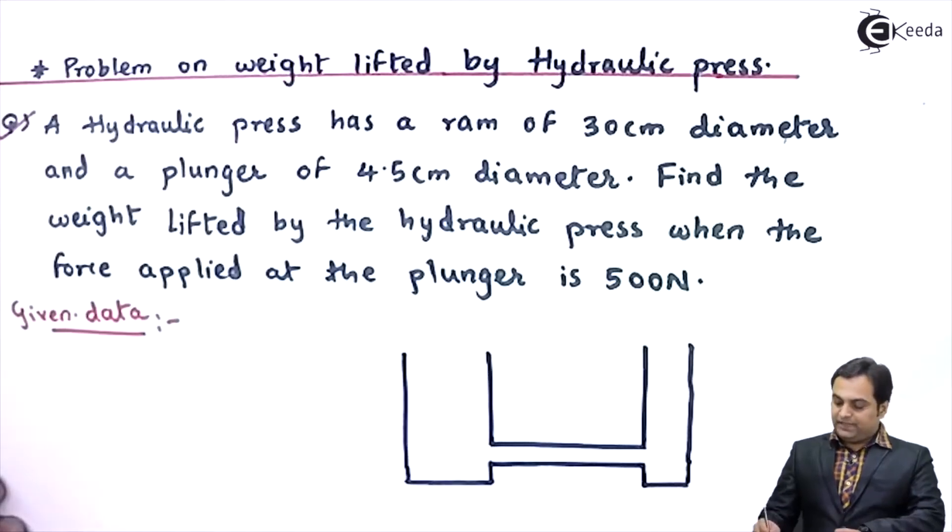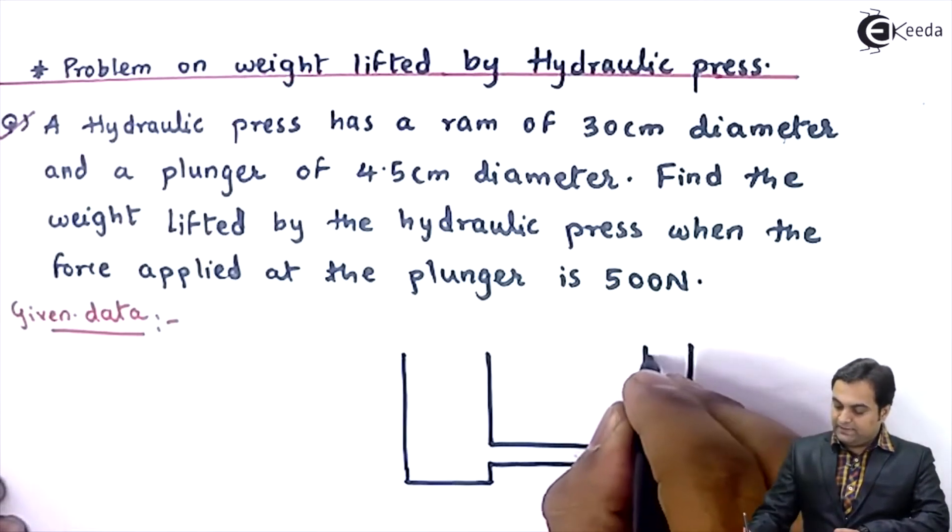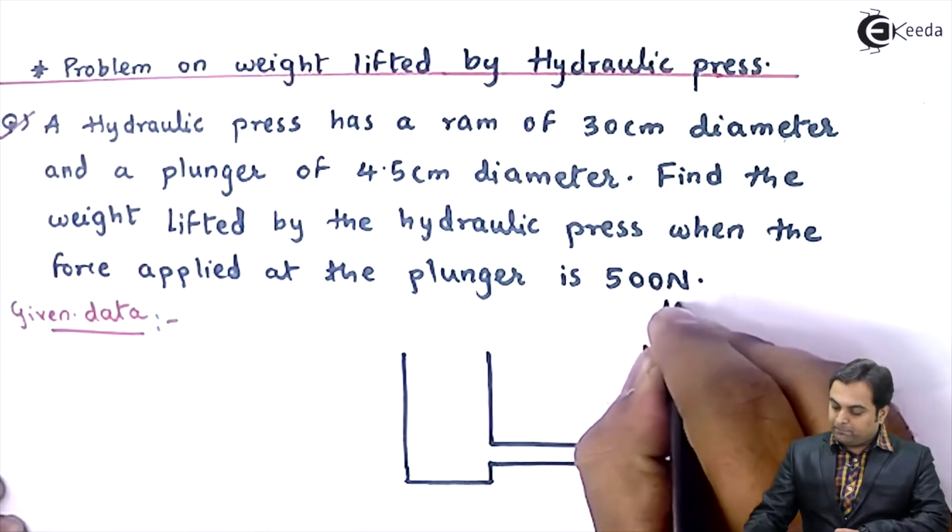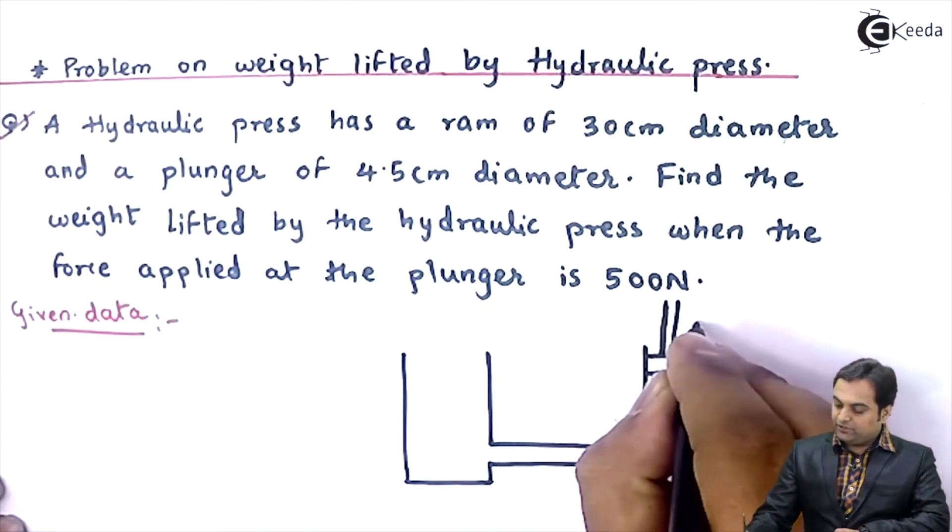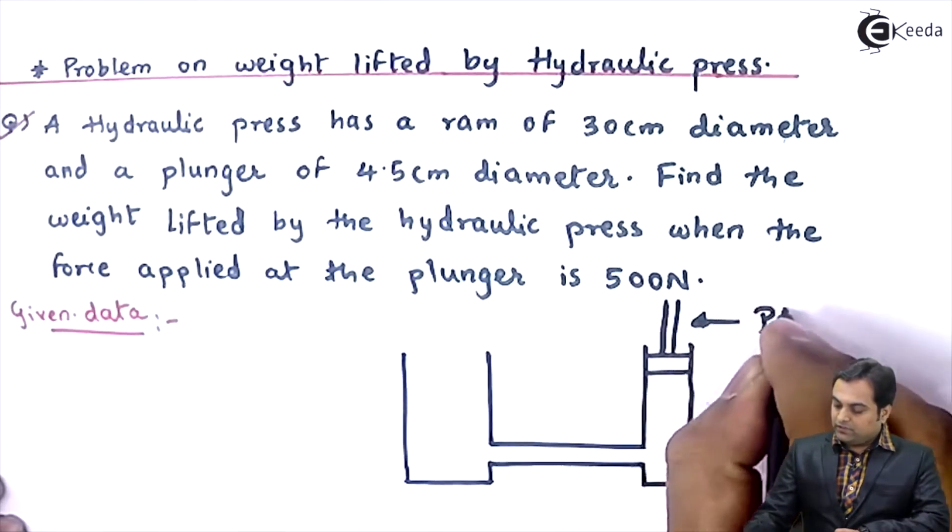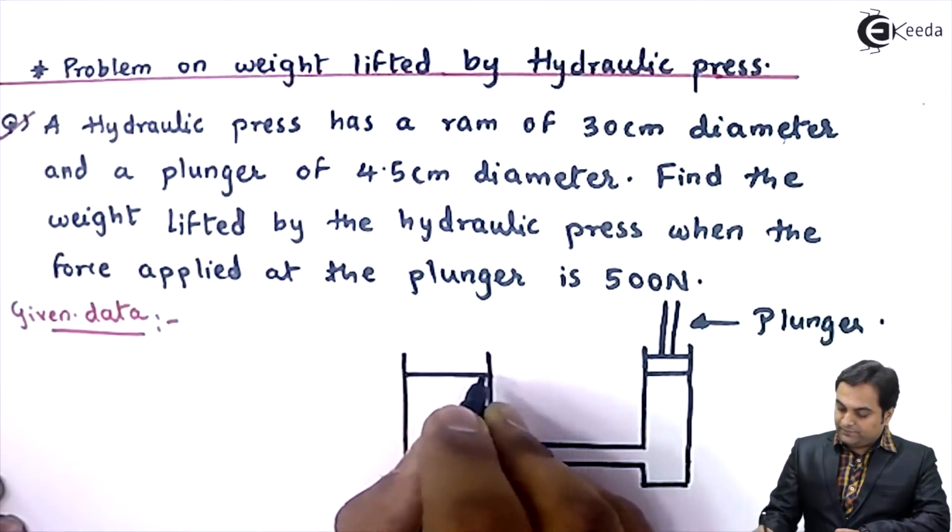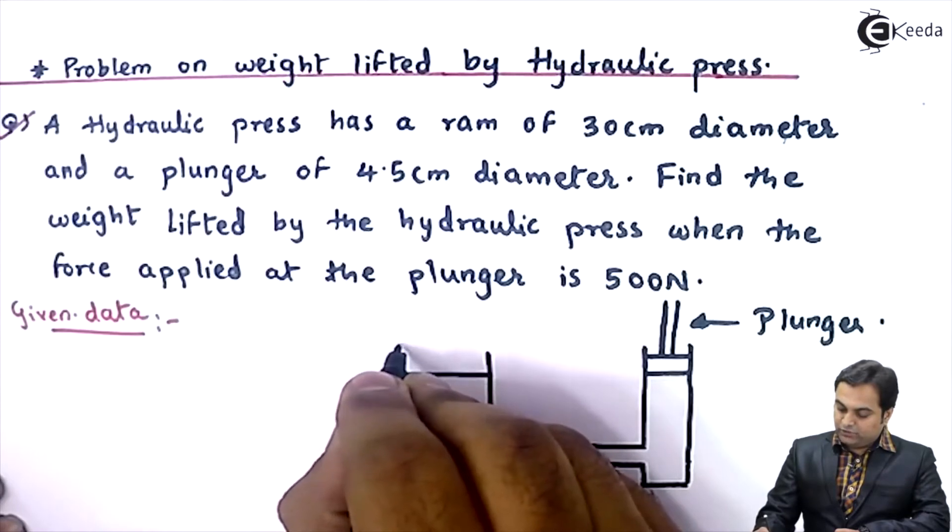Now hydraulic press has two ends. At one end we would be having a plunger. I am drawing here, this is the plunger. At the other end there is a load.